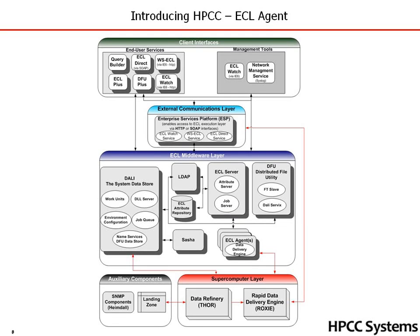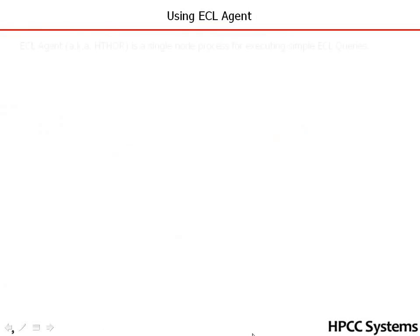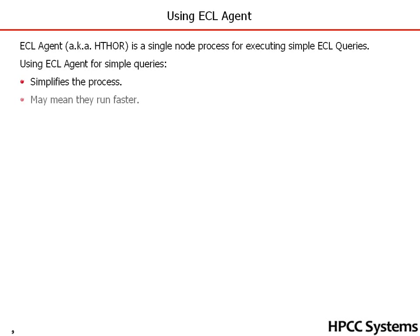The last thing we'll look at in part one of this series is the ECL agent. The ECL agent is the component that accesses the supercomputer layer. Also known as HTHOR, it is a single-node process, single server, for executing simple ECL queries. Using the ECL agent for simple queries simplifies the process and may also mean that they run faster.